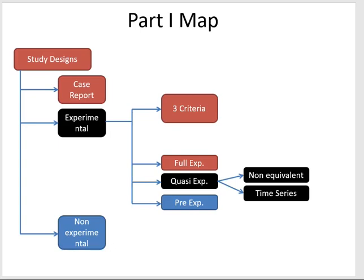Quasi-experimental designs are what happen when you lose one of the two requirements for full experimental designs. If you think about the RCT, the three criteria would be randomization, control group, and intervention (trial). You cannot lose the intervention, otherwise the study is no longer an experimental design. Therefore, you might lose your control group or your randomization.